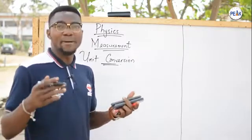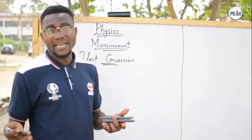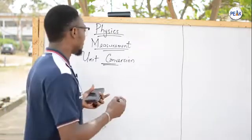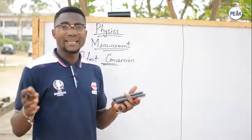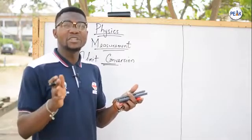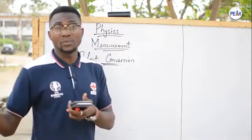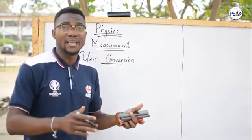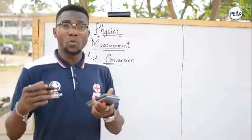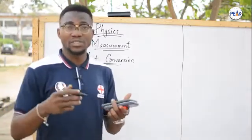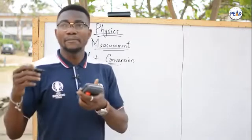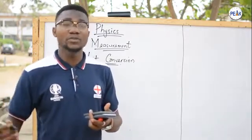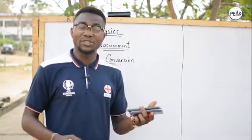You already know that measurement is a means by which you can obtain the magnitude or size of any physical quantity. There are some very big measurements and also very small measurements you can obtain in physics, and that was how the knowledge of prefixes was introduced — where we have powers of 10 that are positive, which are multiples, and powers of 10 that are negative, which are submultiples.